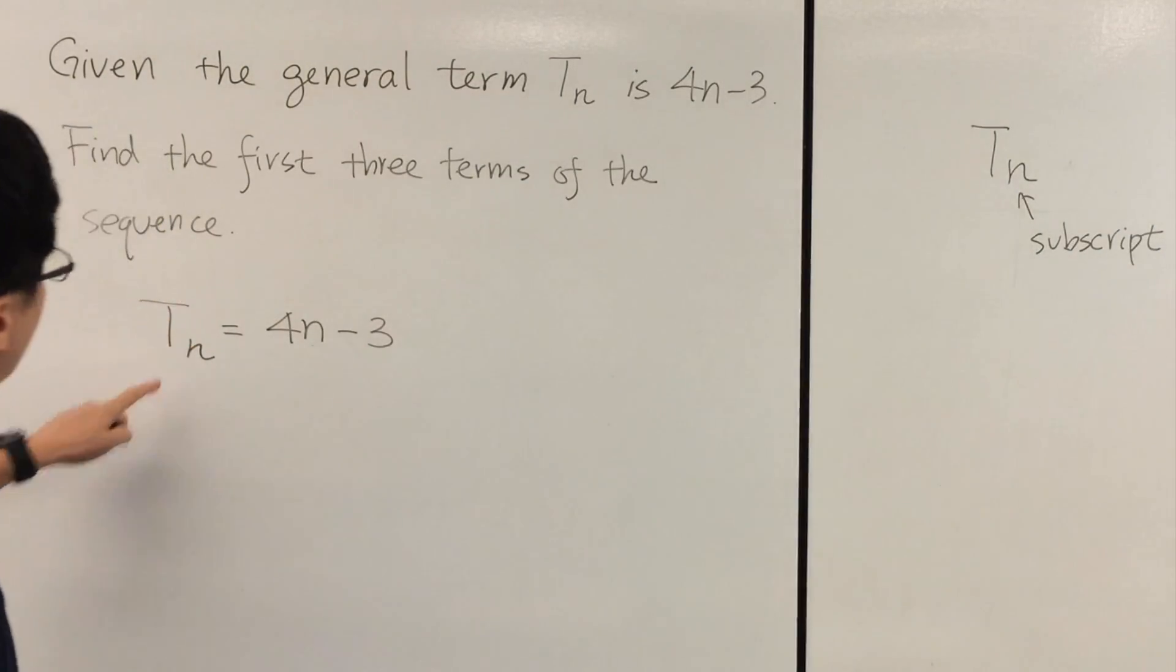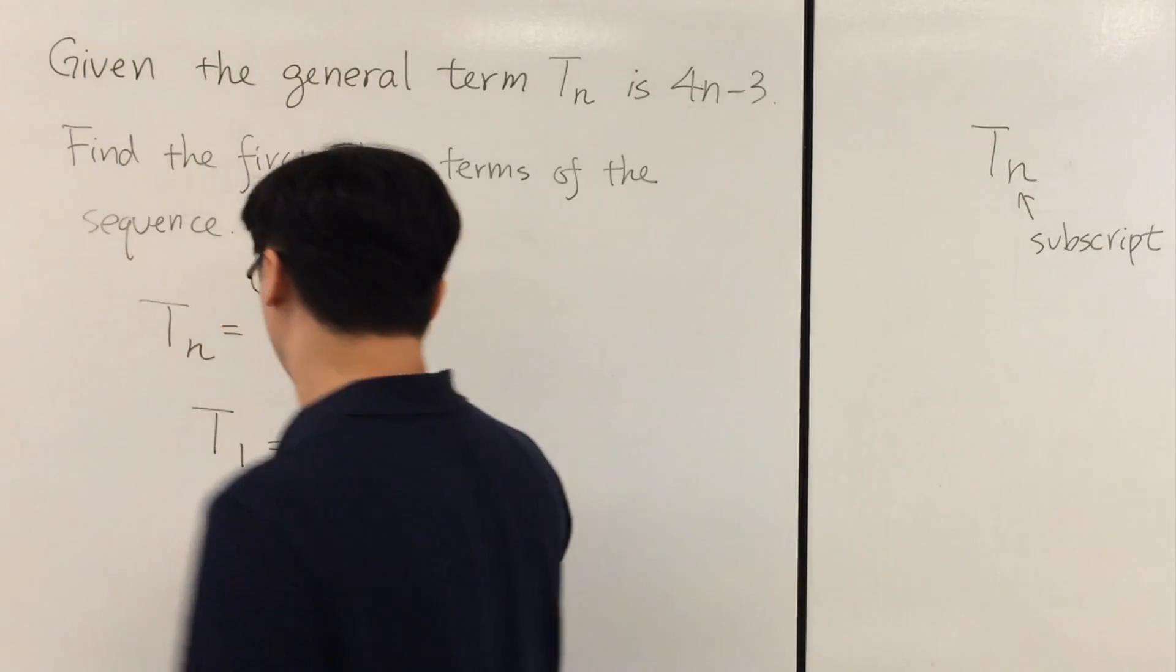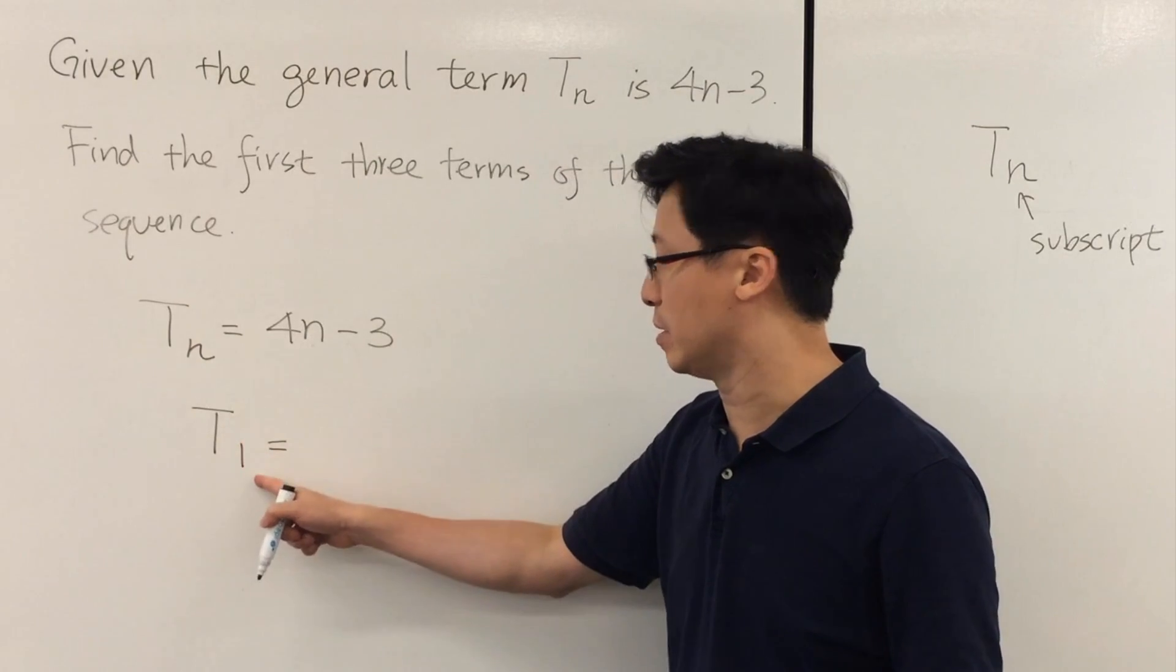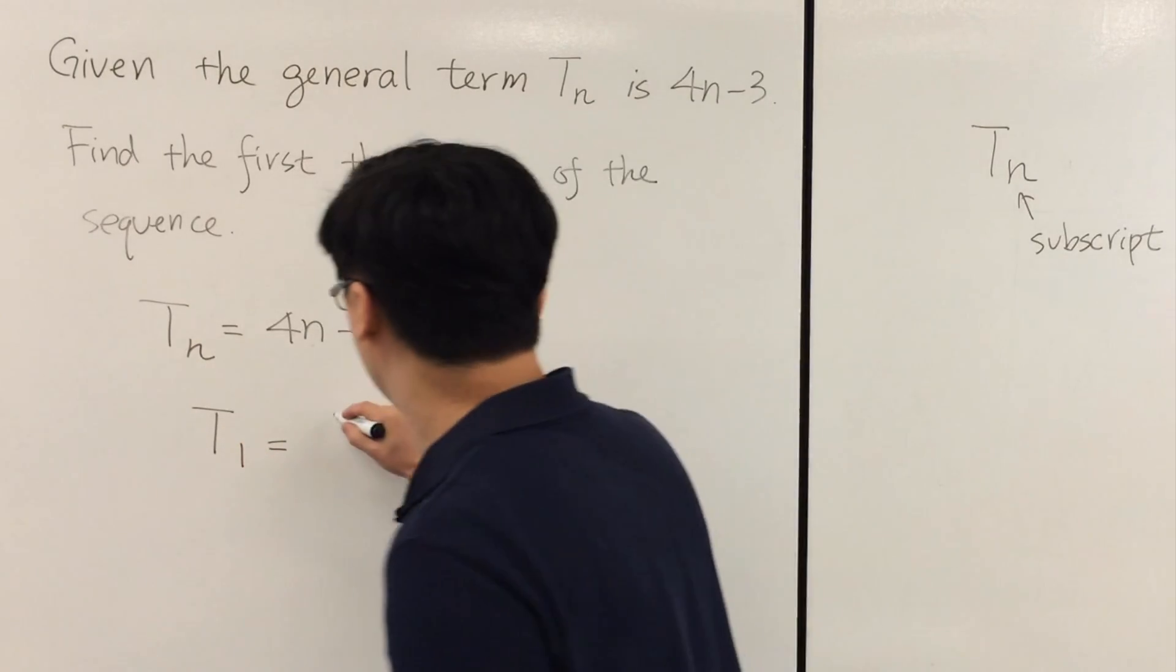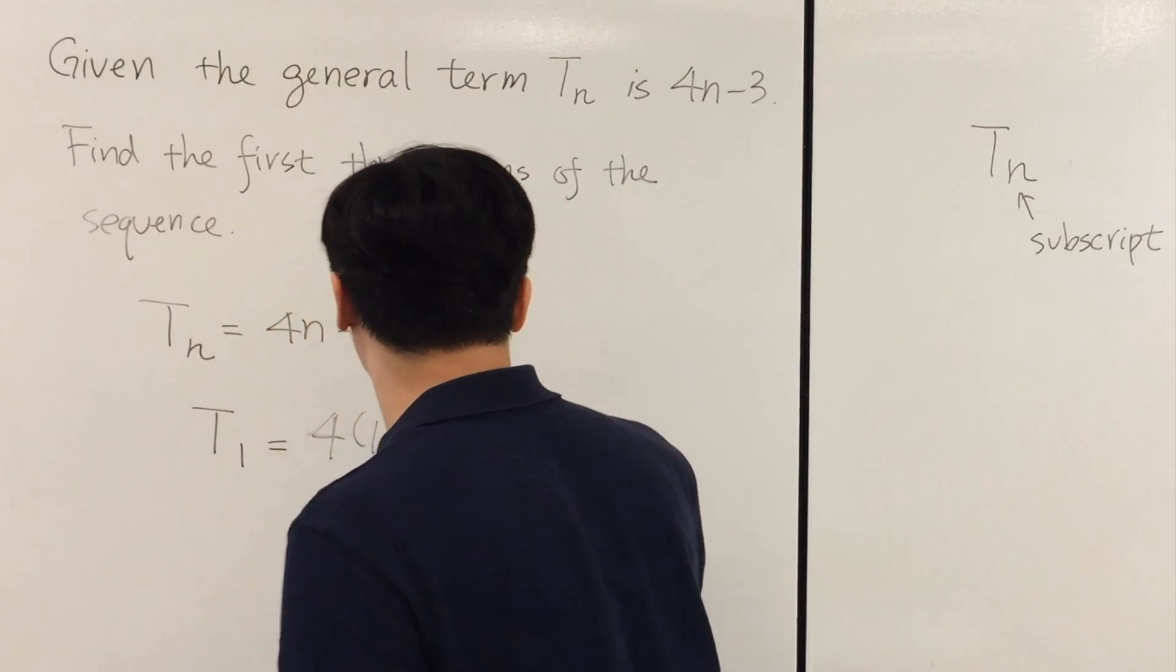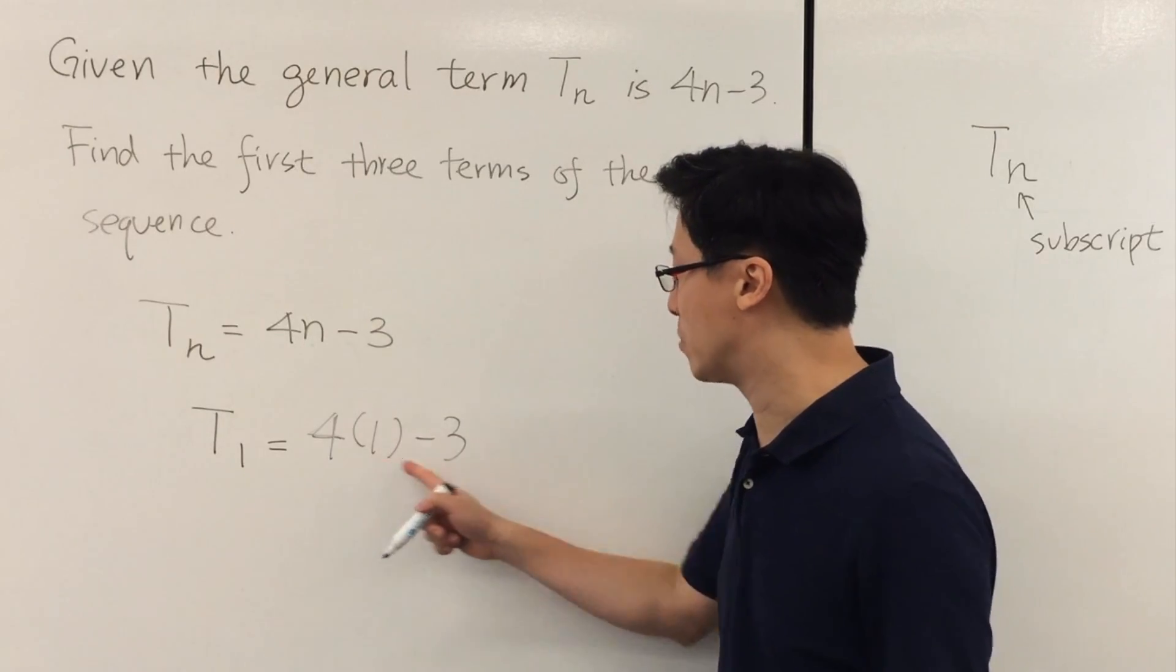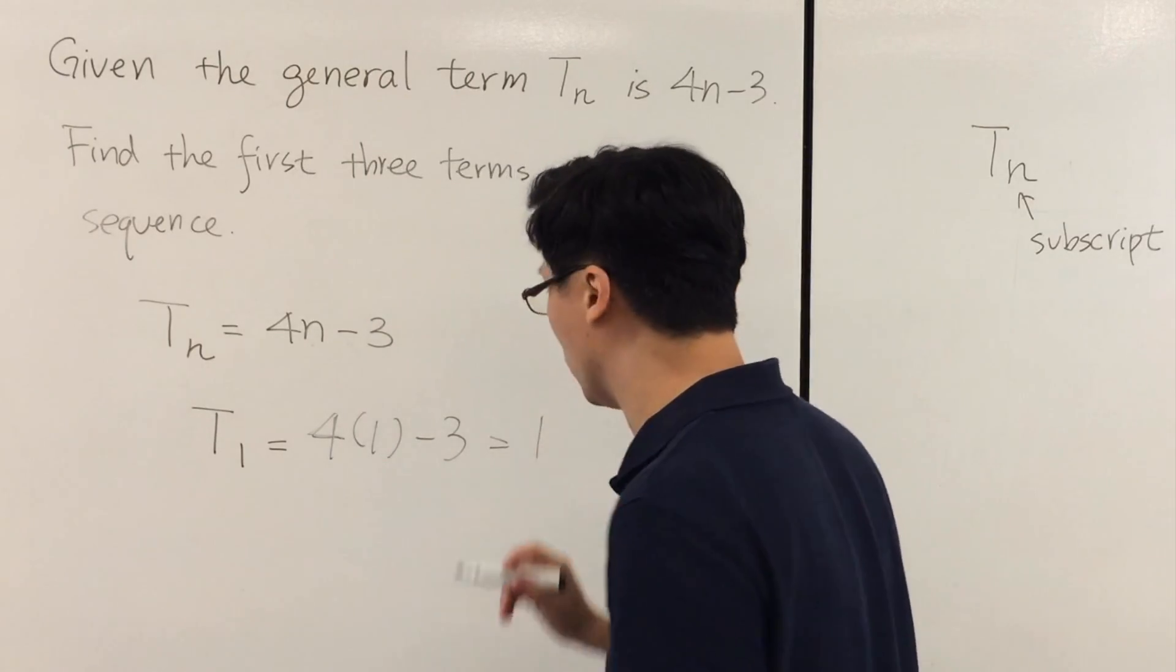And now the first term - we represent the first term in this way: T subscript 1. And then we can substitute 1 into n. That is 4 times 1 minus 3, we get 1.